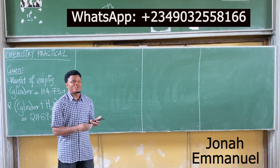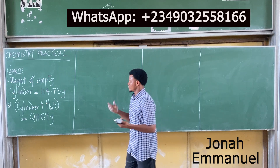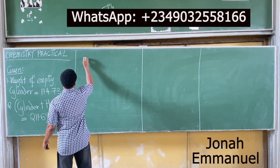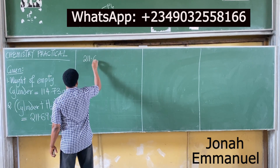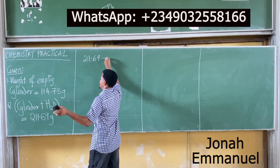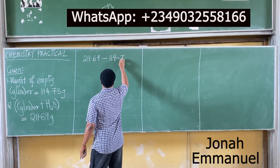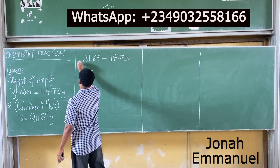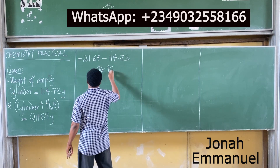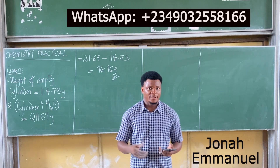They're asking you: what is the weight of water? How do you get that? Subtraction. So it becomes the weight of cylinder plus water, which is 211.69, minus the weight of the empty cylinder, 114.73. Your value? 96.96 grams. So that's your answer. It's that simple.